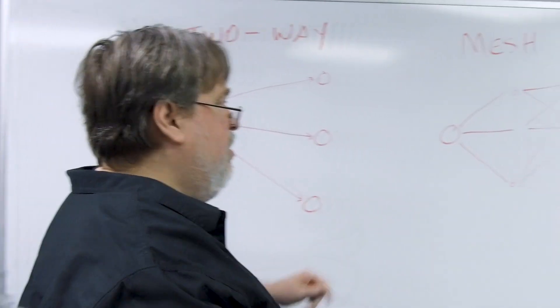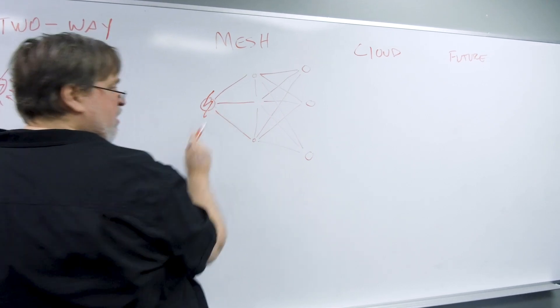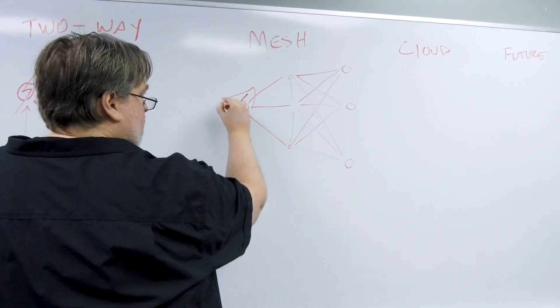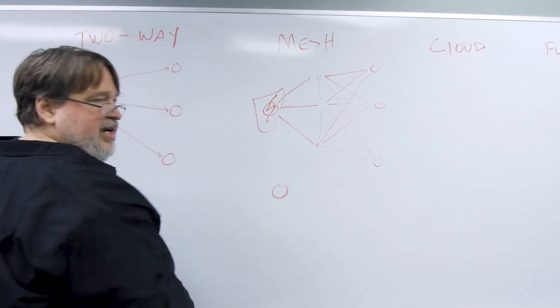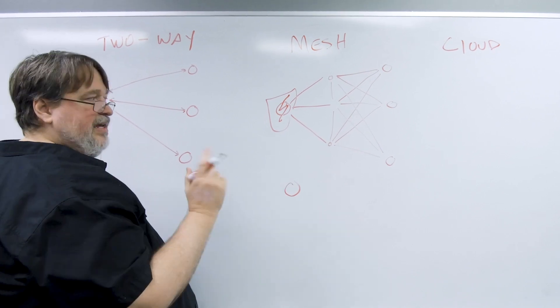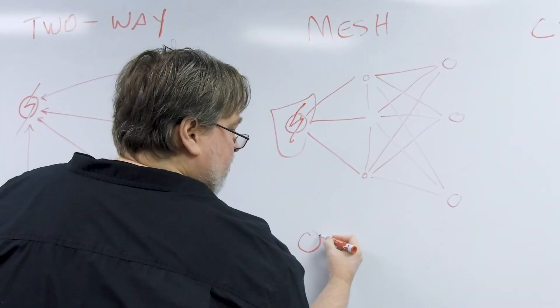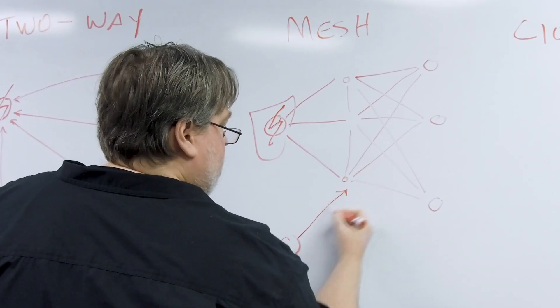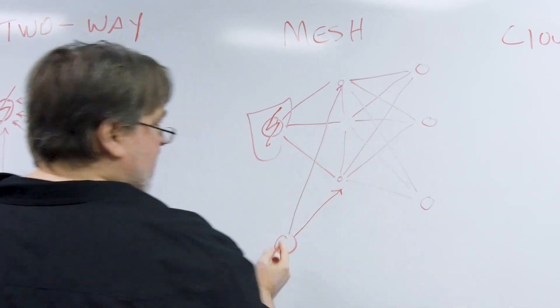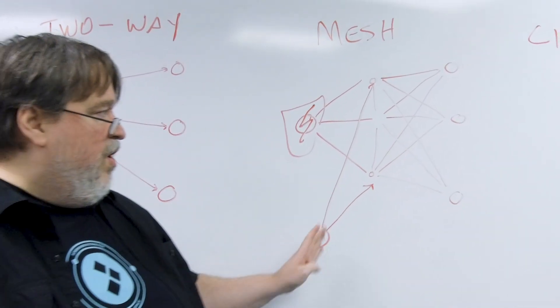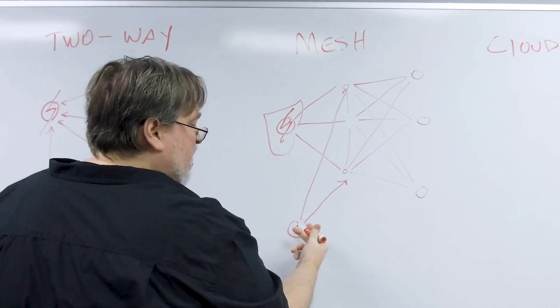Now let's do the same thing, lightning bolt through here, takes this out. Here's my control. Guess what? The Alexa is also a Zigbee 3.0 and also can talk to these nodes, does not have to talk to this.